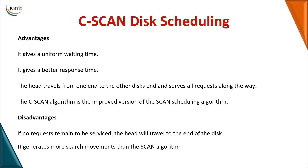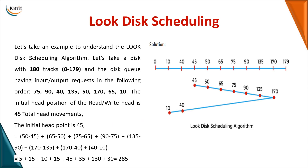C-SCAN provides uniform waiting time for all operations and better response time compared to SCAN. It is an improved version of the SCAN algorithm. However, if no requests remain to be serviced on one side, the head still travels to the end of the disk before servicing requests on the other side.